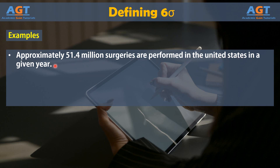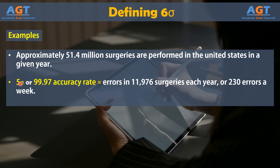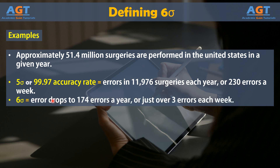The CDC reports that approximately 51.4 million surgeries are performed in the United States in a given year. Based on a 99.97% accuracy rate, doctors would make errors in 1,976 surgeries each year, or 230 surgeries a week. At Six Sigma, that level of error drops to approximately 174 errors a year for the entire country, or just over 3 errors each week.